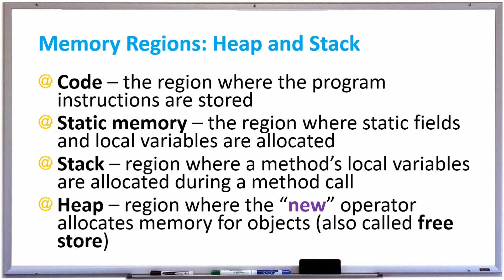In Java, the code and static memory regions are actually integrated into a region of memory called the method area, which also stores information for every class type used in a program. So let's take a look at a diagram that illustrates all these different memory regions.